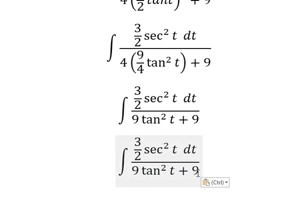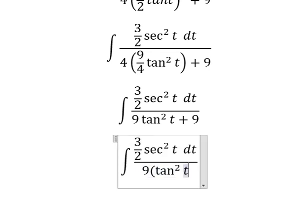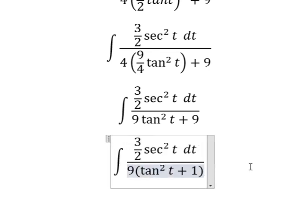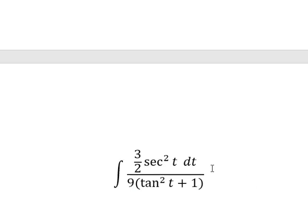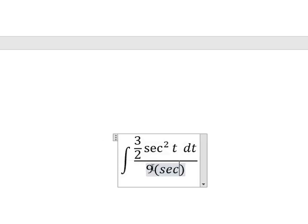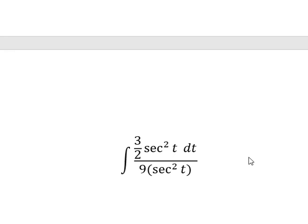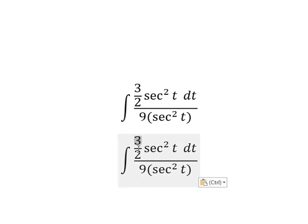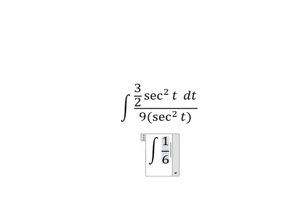Nine and number nine we can do factorization. This one we change by secant of t squared. And now we can simplify the numbers here and that is one over six. This one we have t over six.